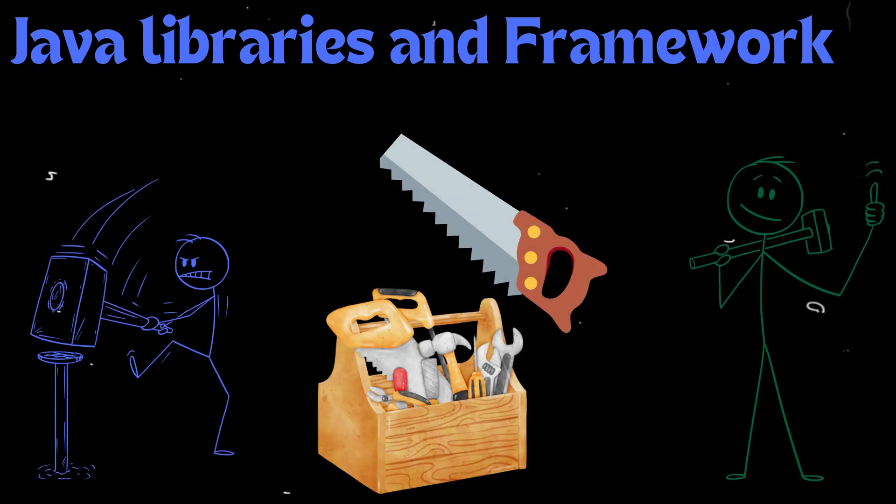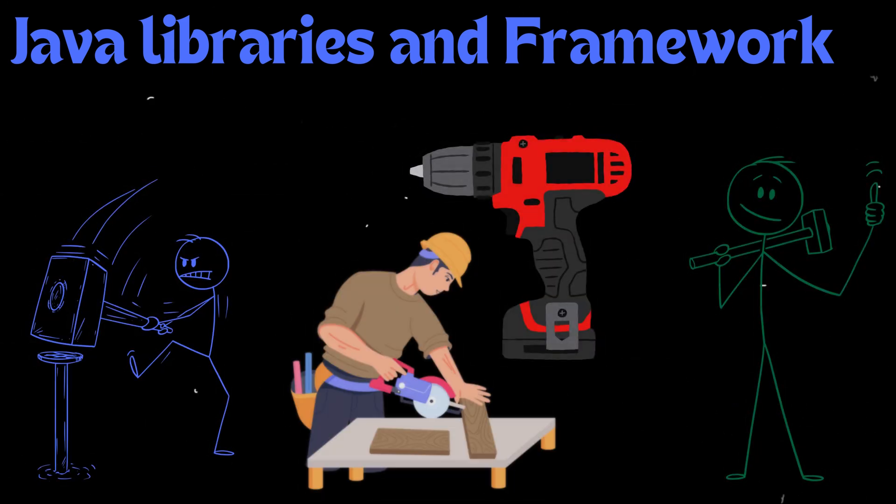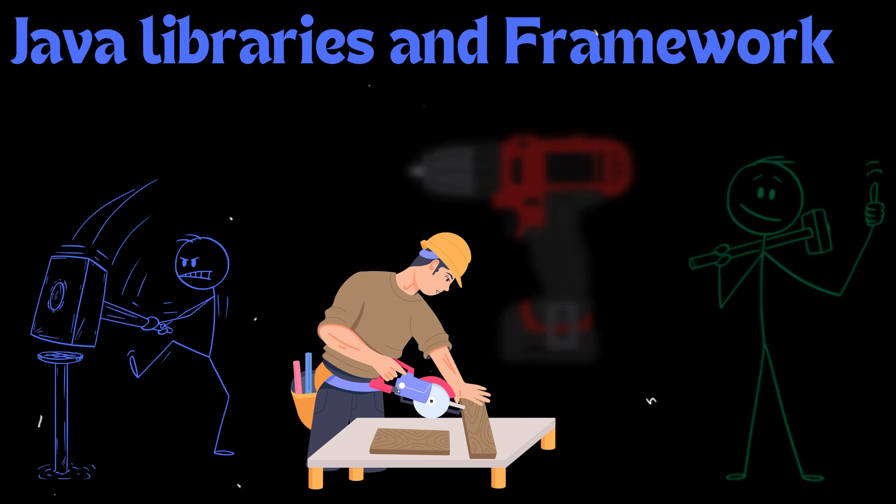Imagine you're a carpenter. You've got your basic tools: hammer, saw, screwdriver. But for certain tasks you need specialized tools like a drill press or a router. Java libraries and frameworks are like those specialized tools, providing pre-built components and functionalities that streamline development, save time, and allow you to focus on the unique aspects of your project.